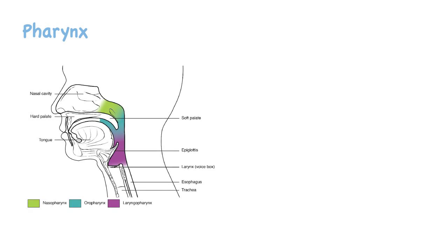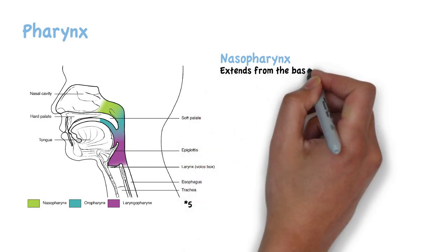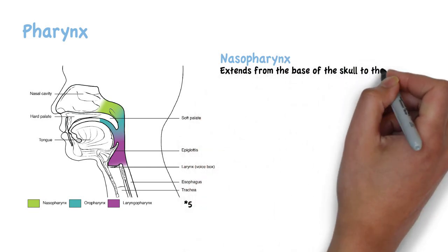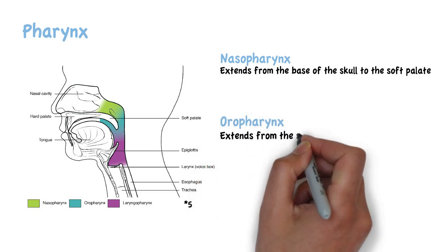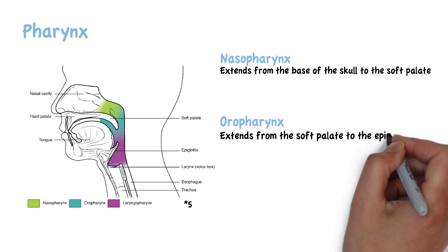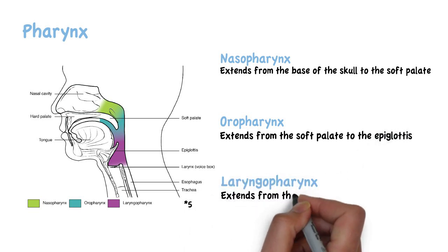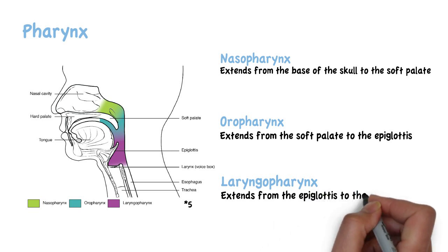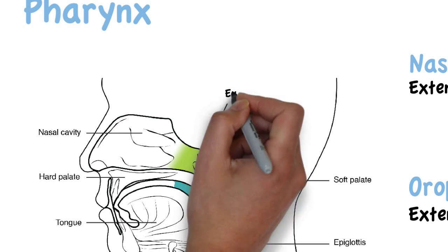The nasal cavity gives way to the pharynx, which is commonly called the throat. The pharynx is divided into three: the nasopharynx, which extends from the base of the skull to the soft palate; the oropharynx, which extends from the soft palate to the epiglottis; and the laryngopharynx, which extends from the epiglottis to the esophagus.